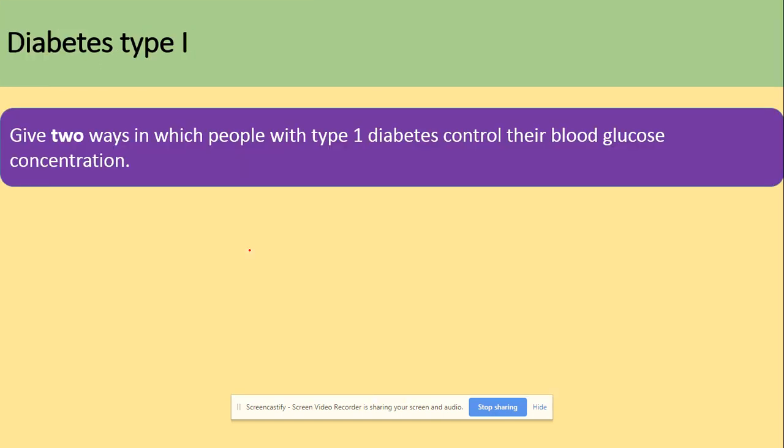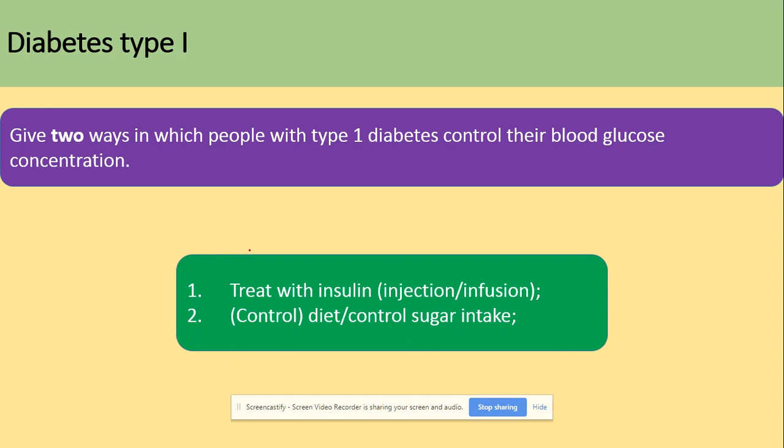We will look at exam questions on diabetes. For type 1 diabetes, we need to give two ways in which people control their blood glucose concentration. Since they cannot produce their own insulin, they will get injections to control blood glucose concentration, and manage their diet.